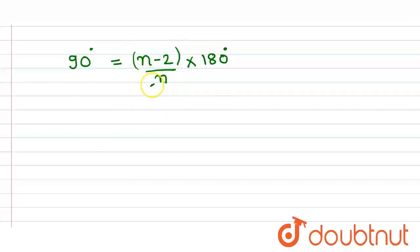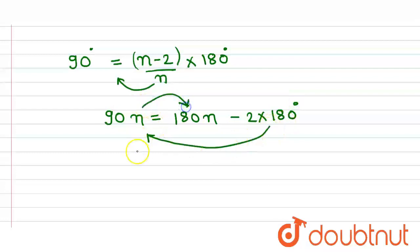Now we would cross multiply this n here. So it becomes 90n equals 180n minus 2 into 180 degrees. Now this term goes here and this 90n comes here.